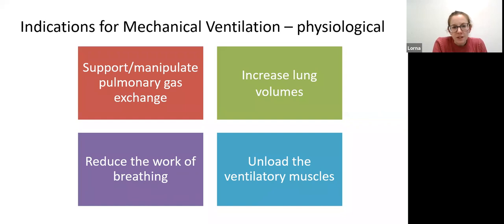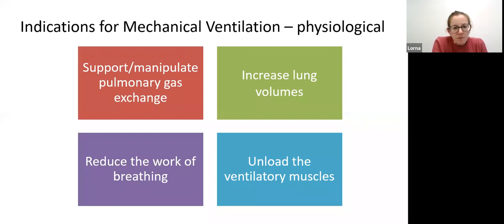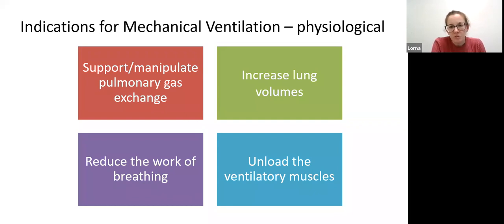We can use ventilation to increase lung volumes, either by increasing pressures or using volume control ventilation. We can reduce work of breathing - initially we sedate the patient and may even paralyse them so their work of breathing is largely or completely removed, and the ventilator does most or all of the work, unloading their ventilatory muscles.